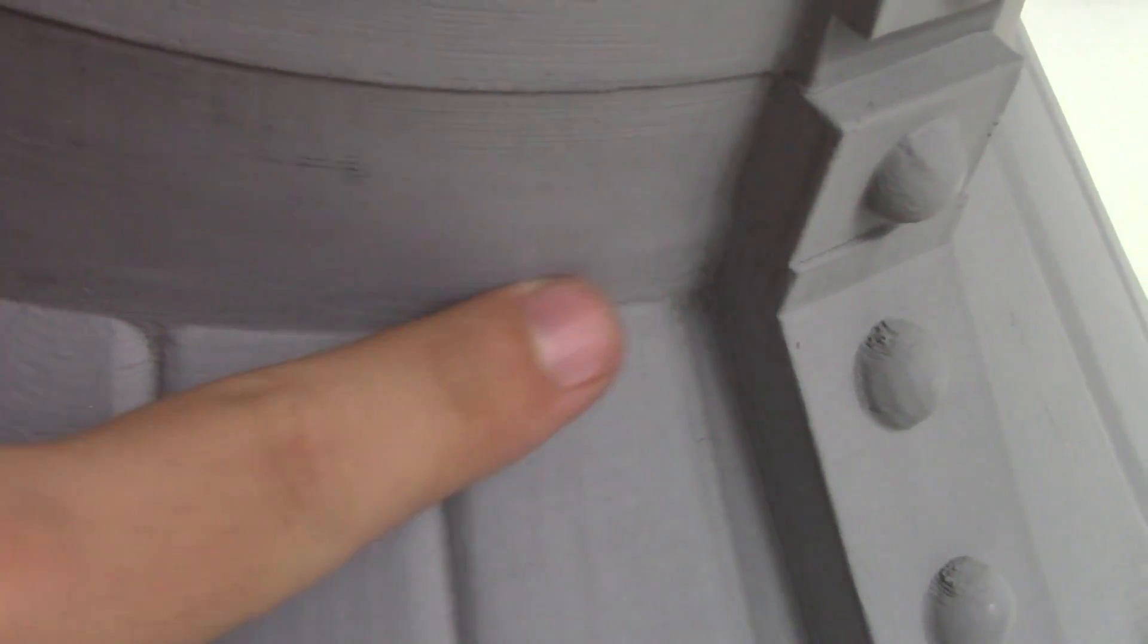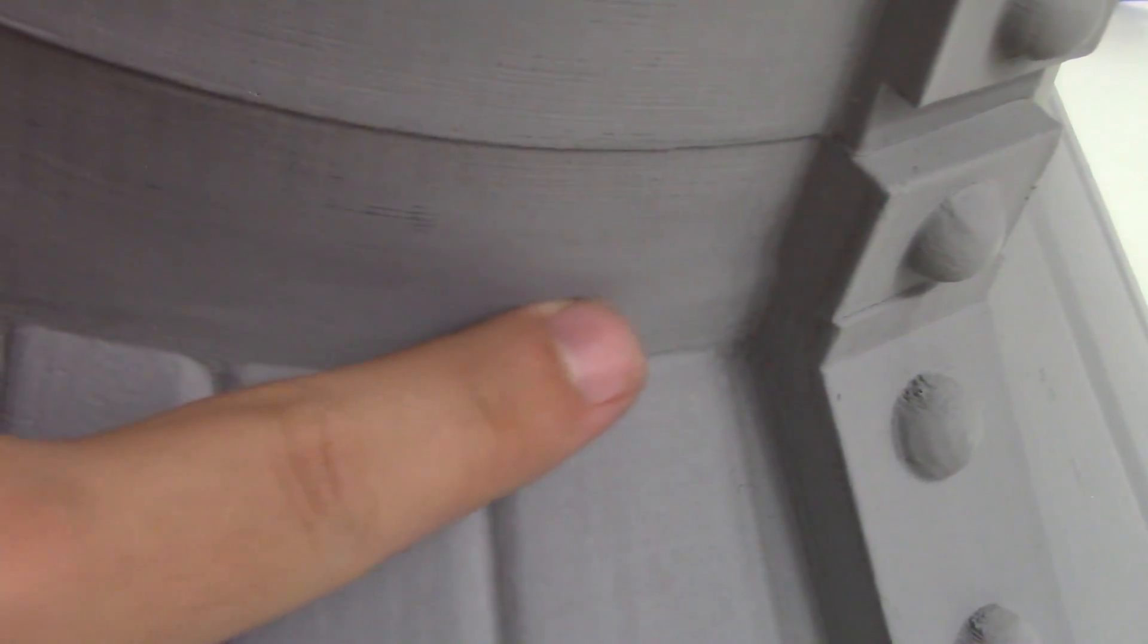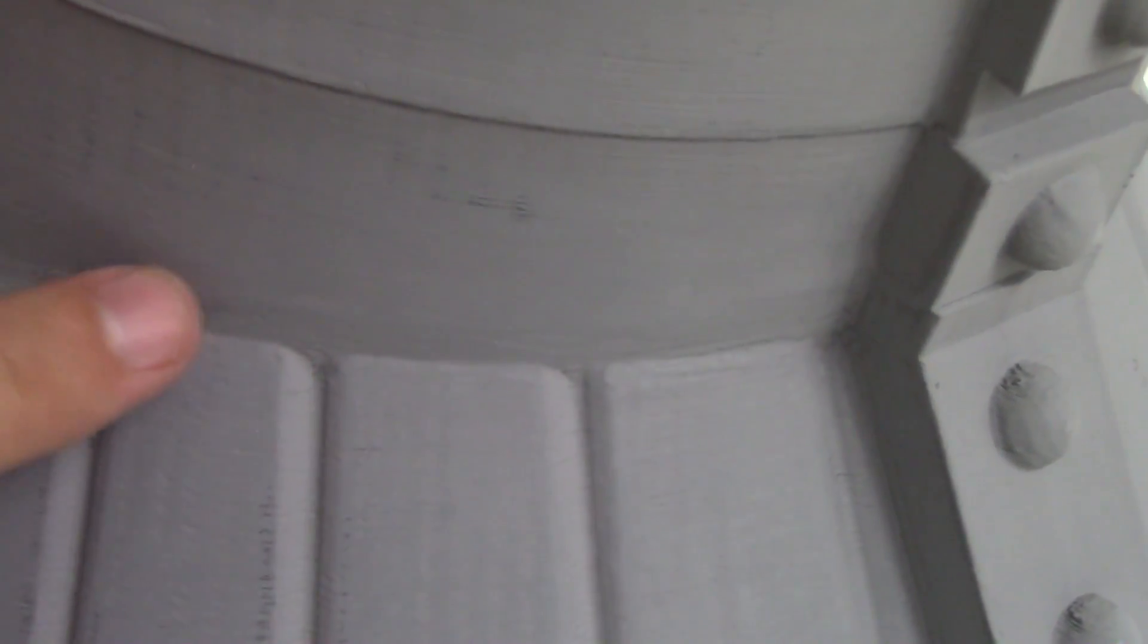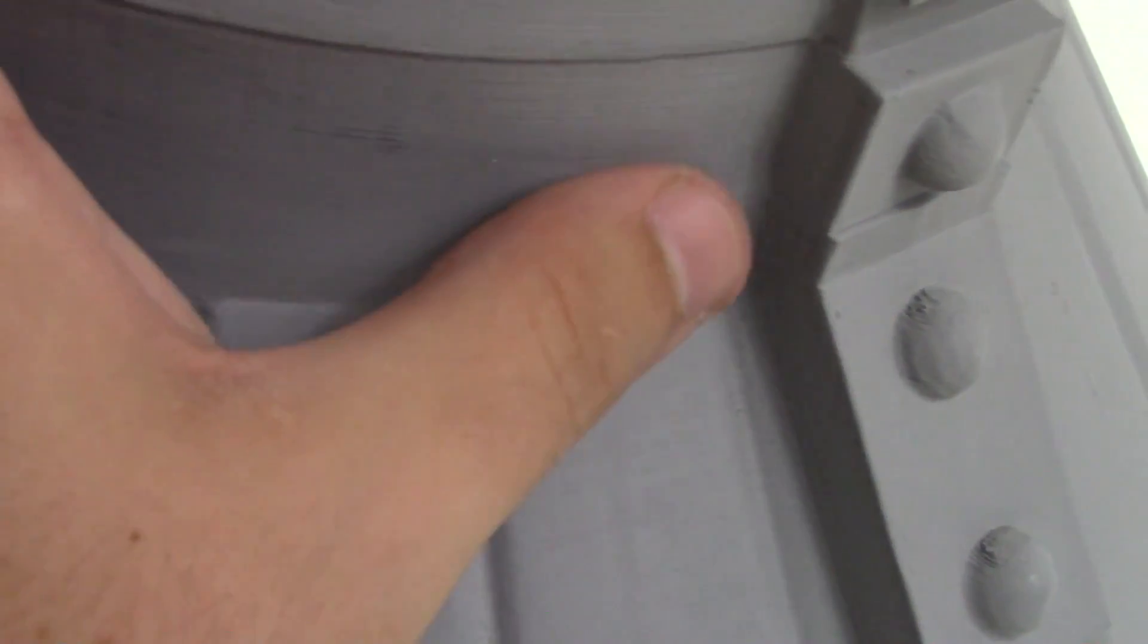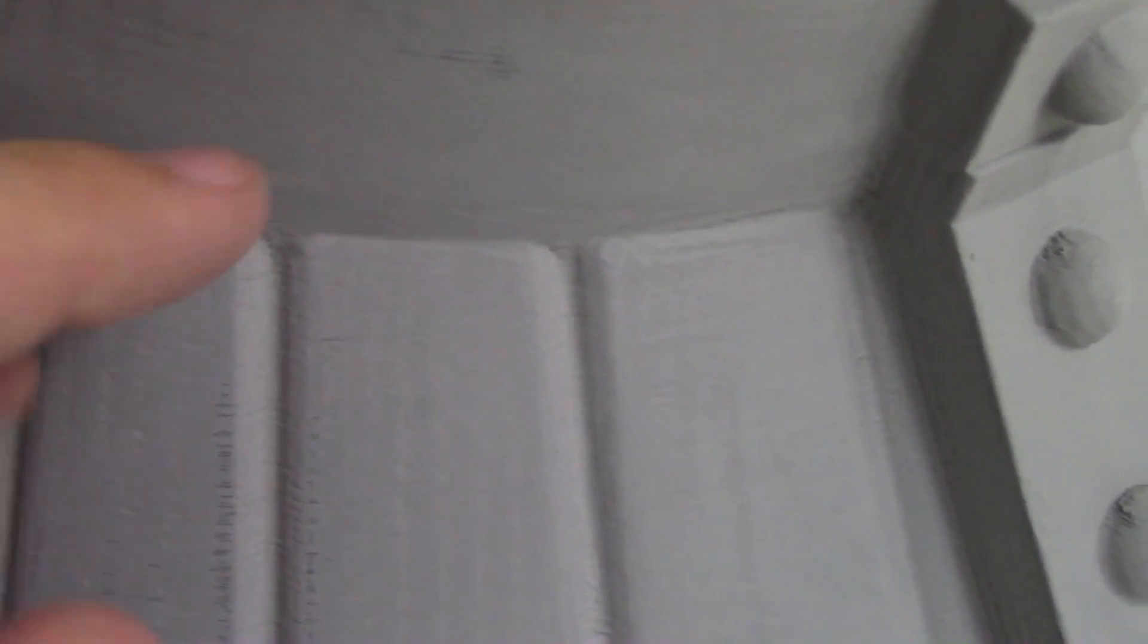One last thing to talk about is the wood filler with the primer. This area back here was covered in wood filler, and you can't really tell a difference, especially since it's been sanded. So that's not really a concern, having the wood filler act differently and absorb more paint than the plastic itself.